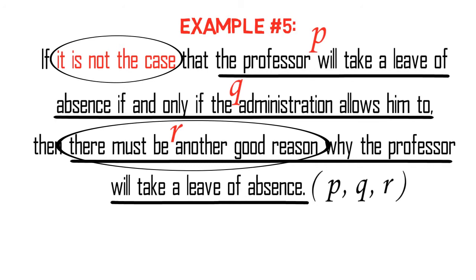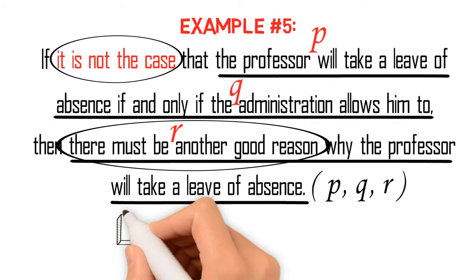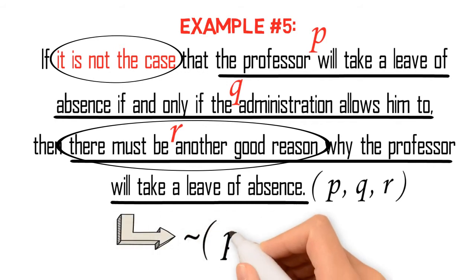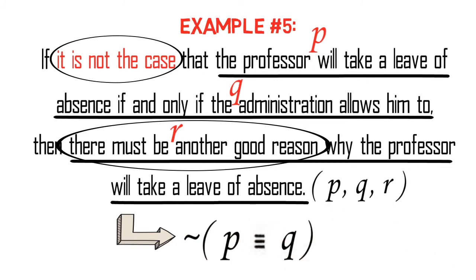Thus, we symbolize the proposition — 'if it is not the case that the professor will take a leave of absence, if and only if the administration allows him to, then there must be another good reason why the professor will take a leave of absence' — as follows: Not P, if and only if Q, then R.